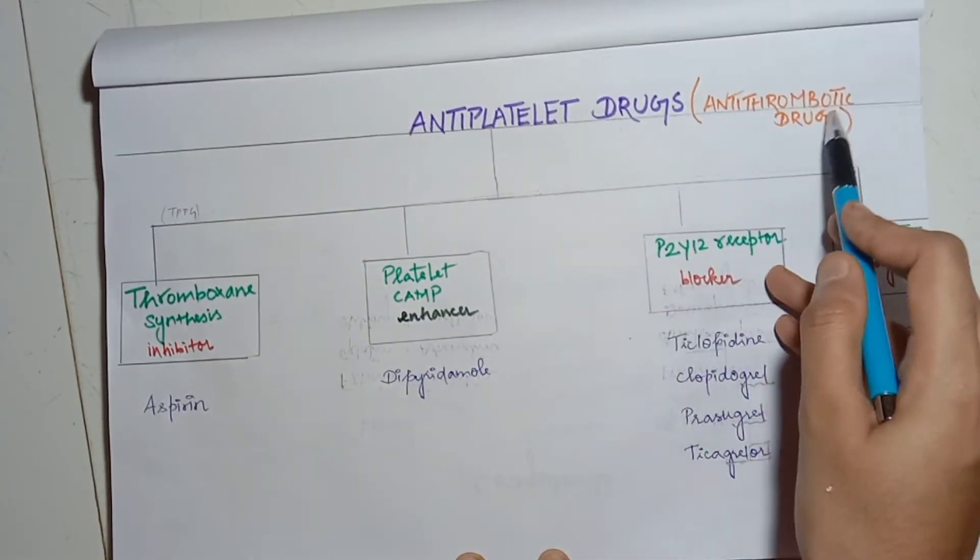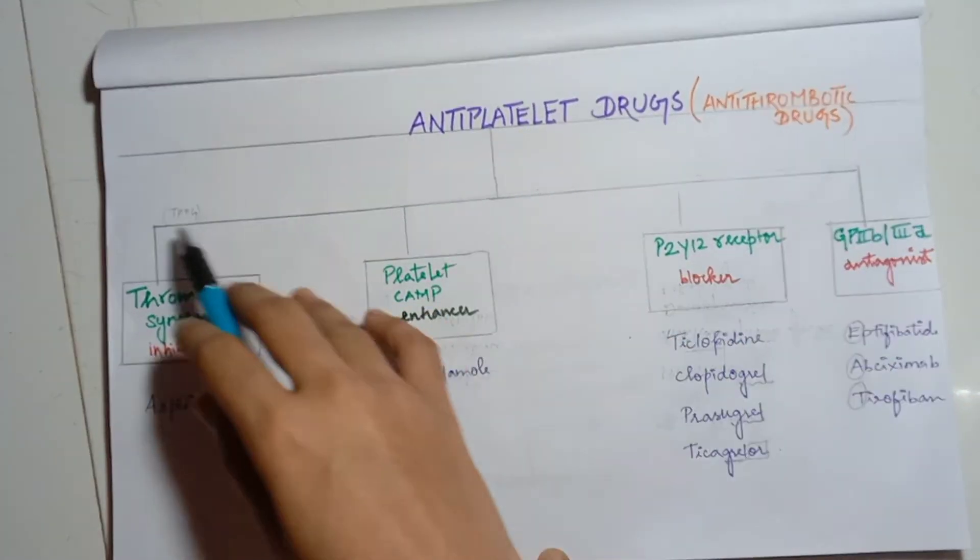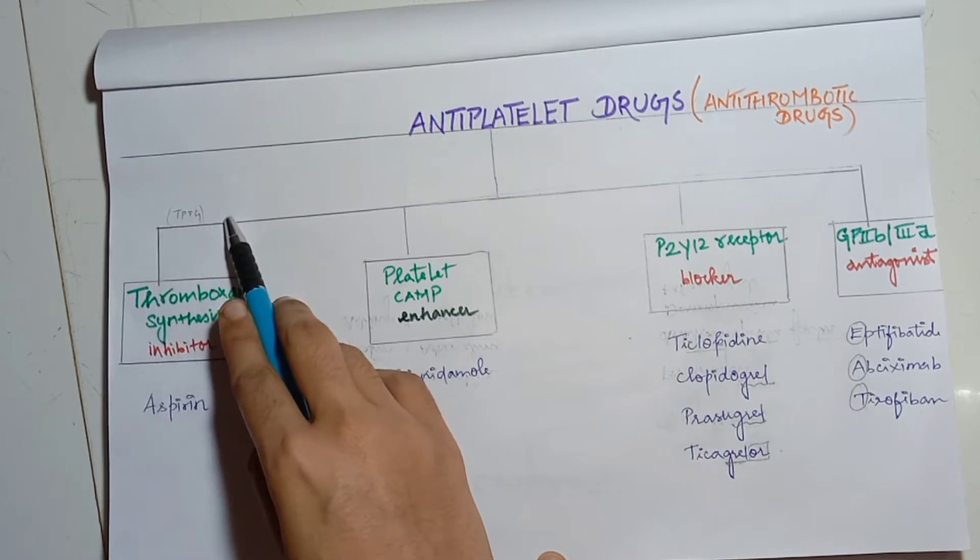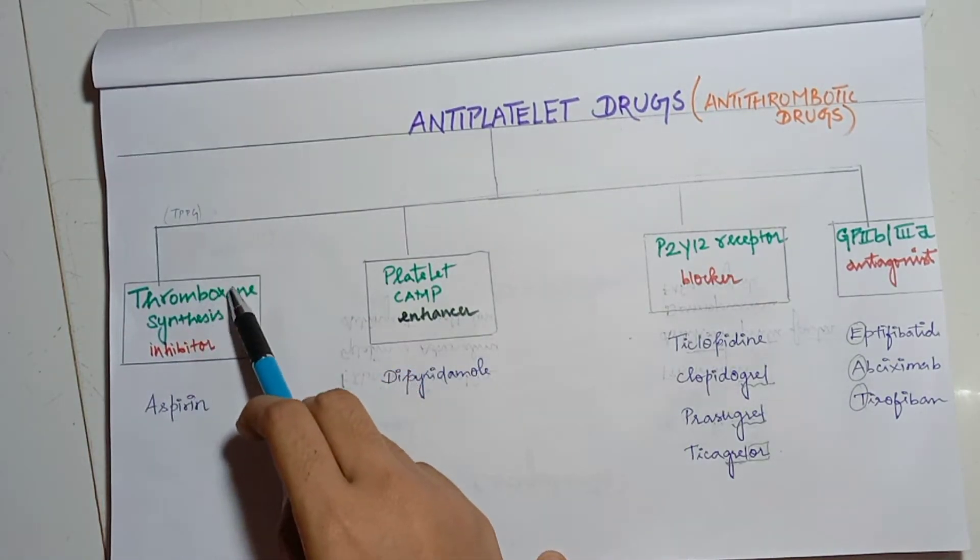Antiplatelet drugs, also called antithrombotic drugs. We will have a mnemonic called TPPG. T is for thromboxane synthesis.